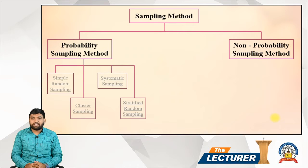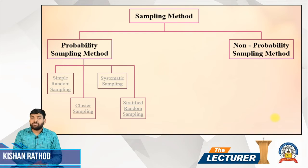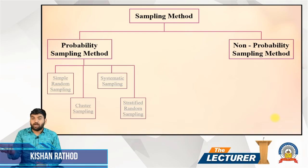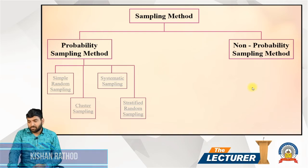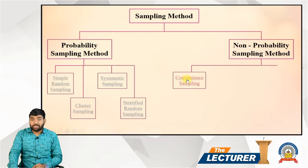In the previous lecture we discussed probability sampling methods. Now in today's lecture we are going to start with non-probability sampling methods. Let's see how many types there are. The first one is convenience sampling.